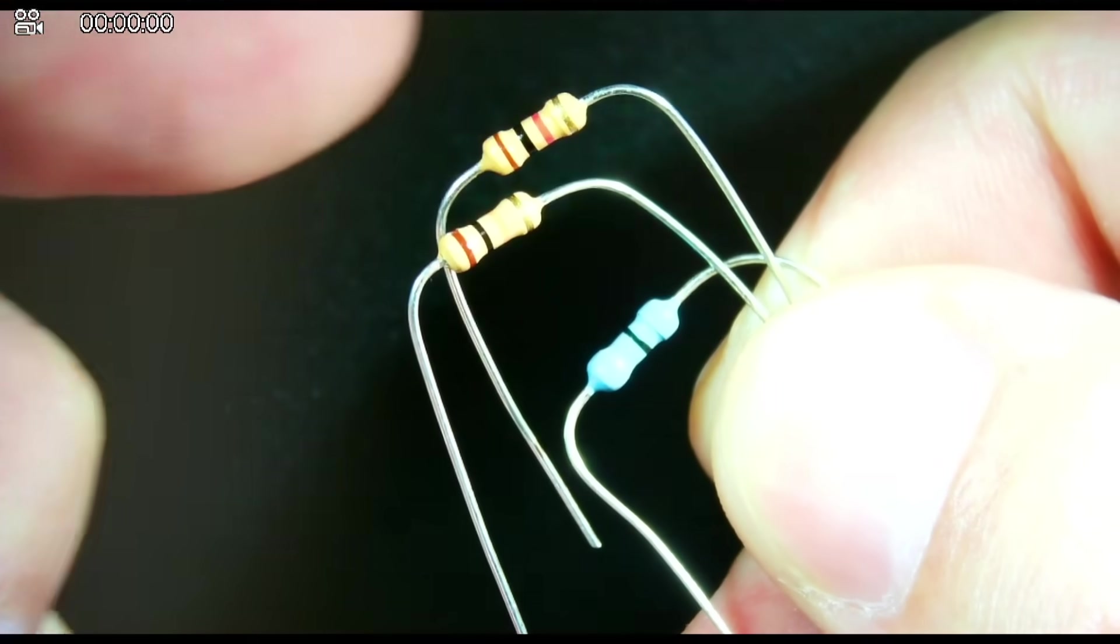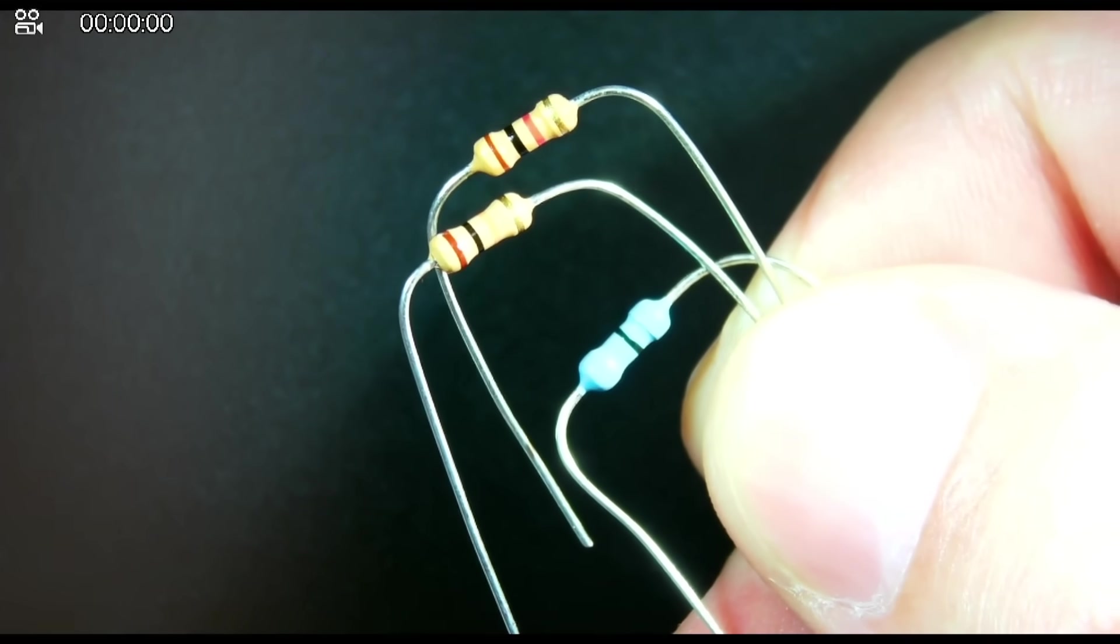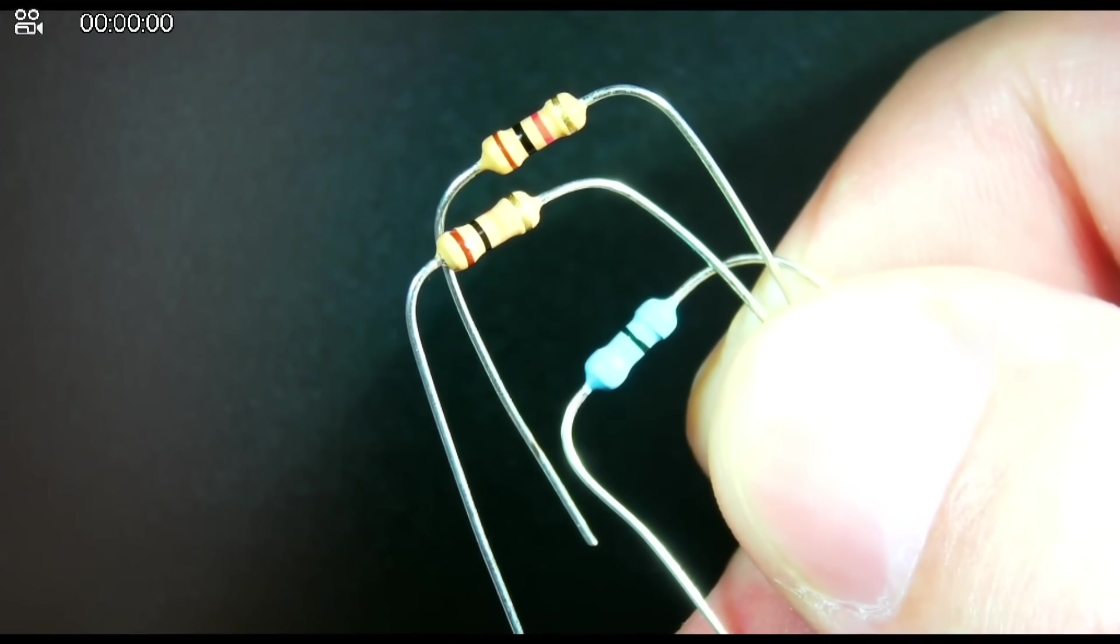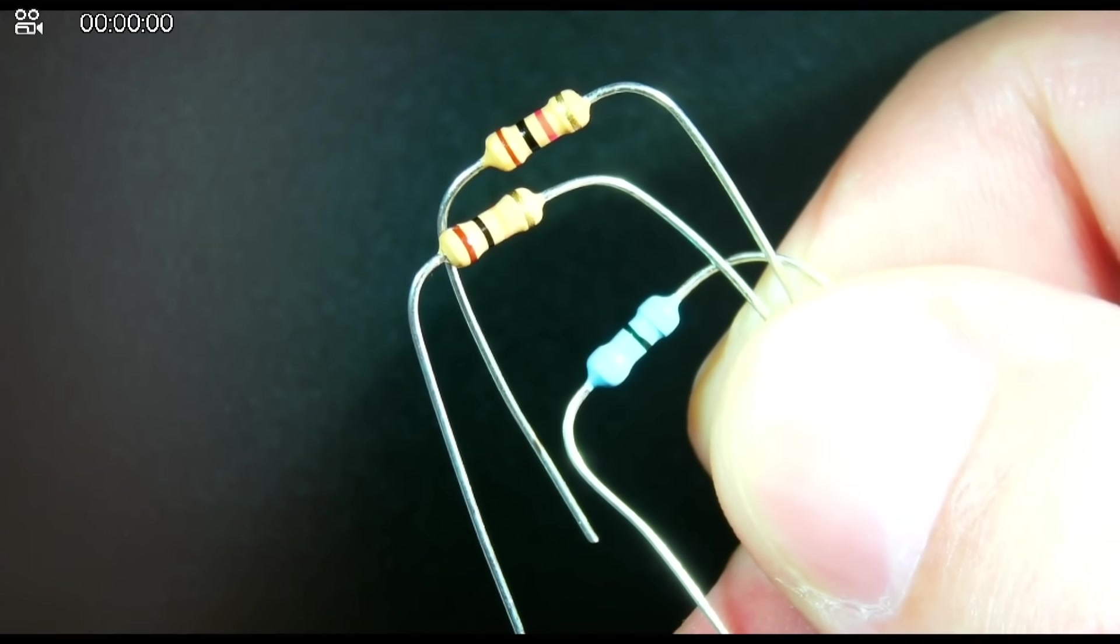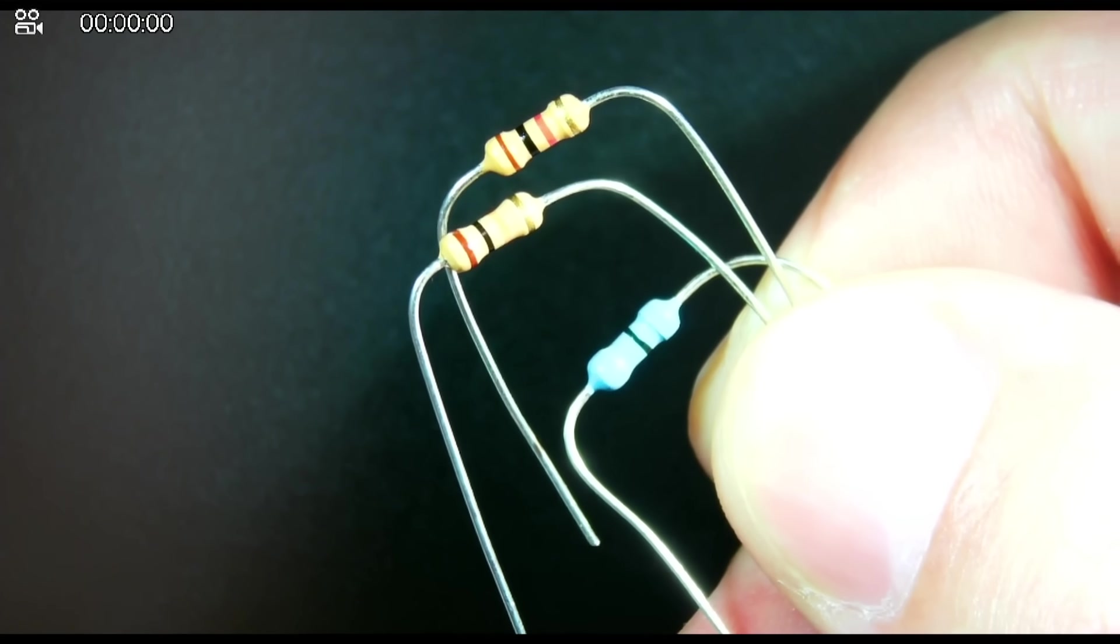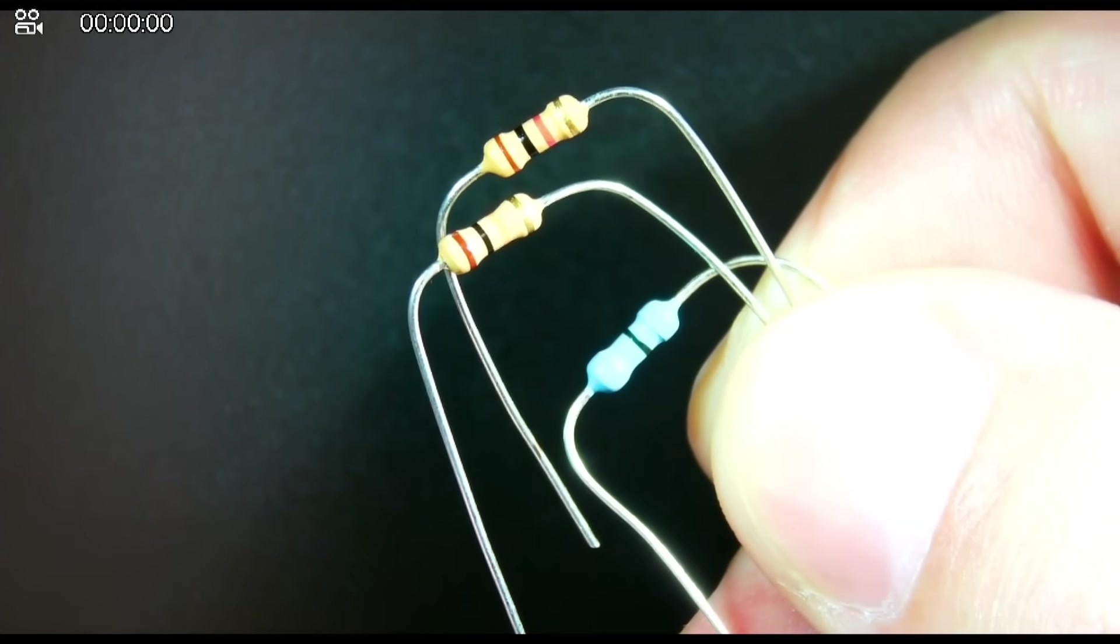This top one has a resistance of 1,000 ohms. I know that because of the colors on it, the brown, black, and red band, the same colors of my high school. And so I know that is 1,000 ohms.